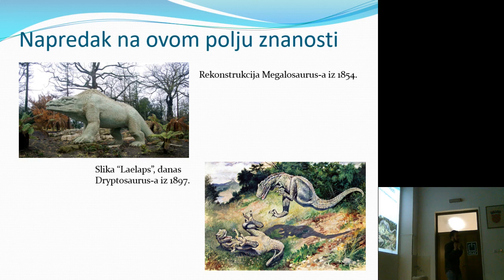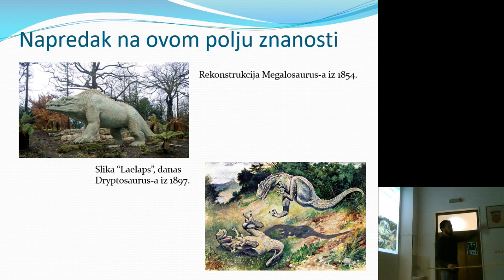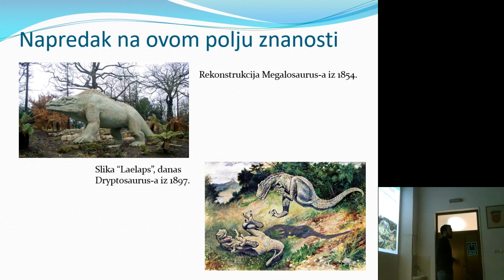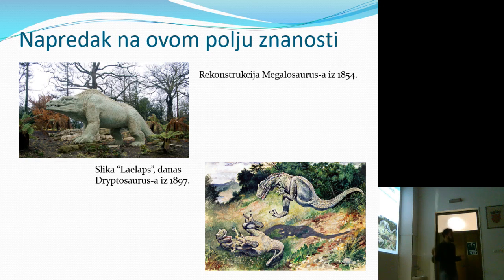To je bio moj diplomski. Kakav je napredak prikazan na ovom polju? Oko 1820. krenuo je pronalazak dinosaura u fosilnom zapisu. Ovi rani prikazi iz 1854., danas izloženi u Londonu, prikazuju potpuno gmazovske dinosaure. Nisu vjerovali da su to bile aktivne životinje, povezivali su ih s današnjim gmazovima. Četrdeset godina kasnije počeli su prikazivati dinosaure kao jako aktivne životinje, ali primijetite - ta životinja je gola, nema uopće perja na sebi.